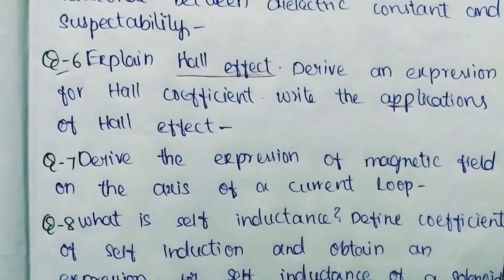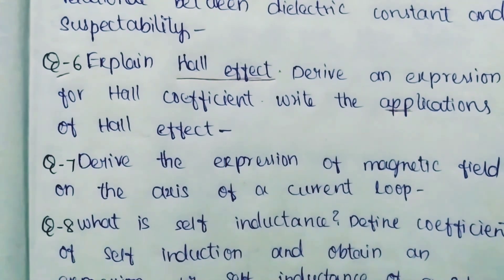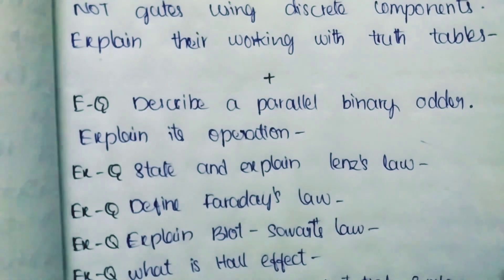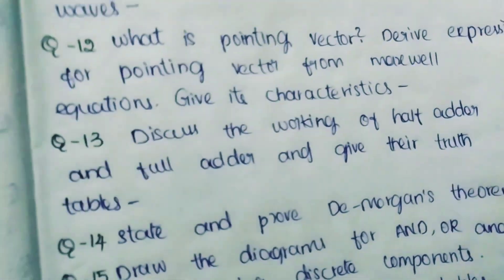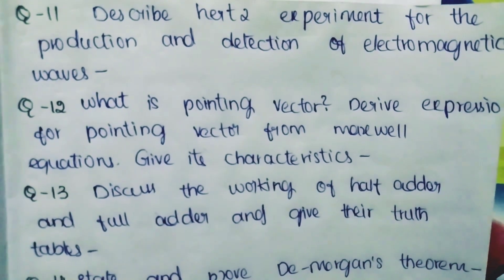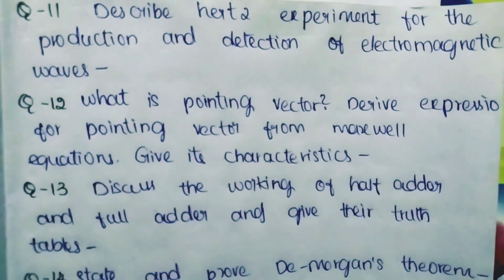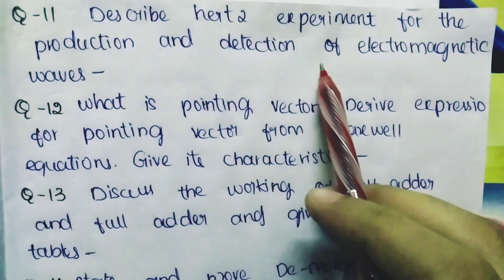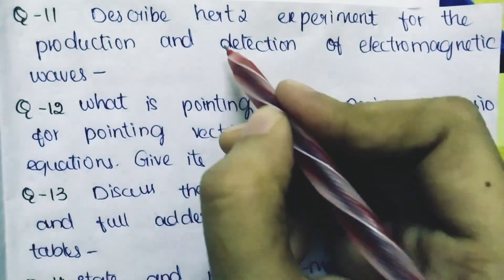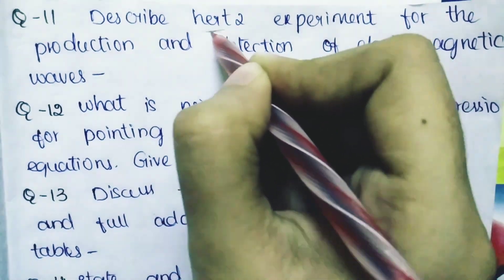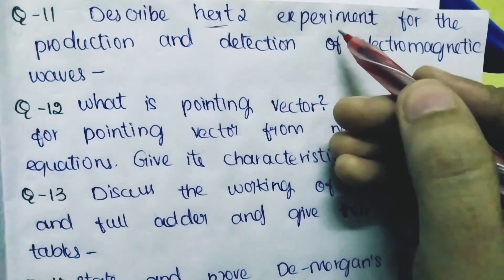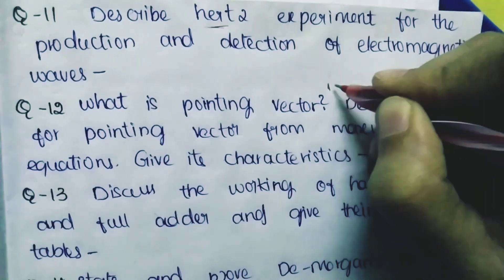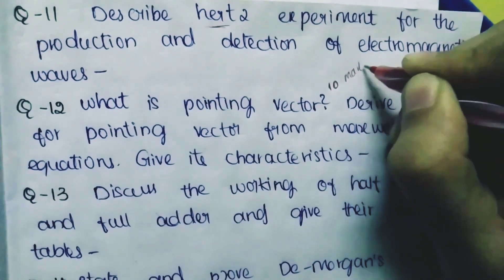Question Number 11: Describe Hertz's experiment for the production and detection of electromagnetic waves. You can see here - just describe Hertz's experiment, and through it, both production and detection are covered. This is again 100 percent a 10-mark question.